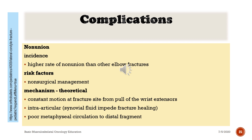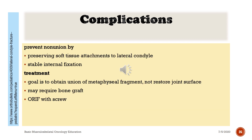Complications — Non-union: higher rate of non-union than other elbow fractures. Risk factors: non-surgical management. Mechanism (theoretical): constant motion at the fracture site from pull of the wrist extensors; intra-articular synovial fluid impedes fracture healing; poor metaphyseal circulation to the distal fragment. Prevent non-union by preserving soft tissue attachments to the lateral condyle and achieving stable internal fixation. Treatment: goal is to obtain union of the metaphyseal fragment, not restore the joint surface; may require bone graft or fixation with a screw.